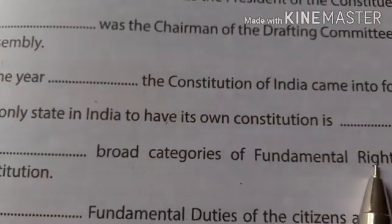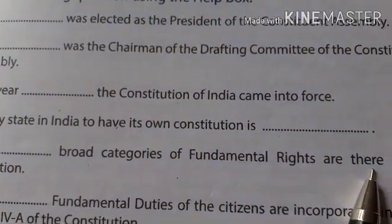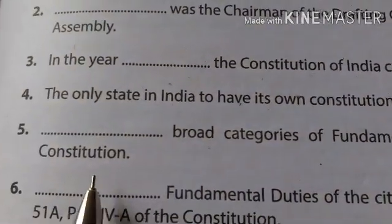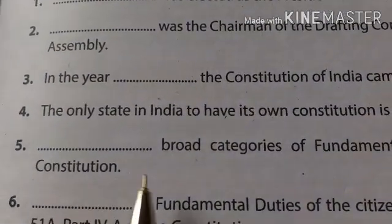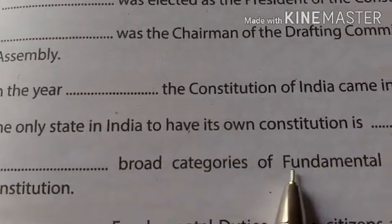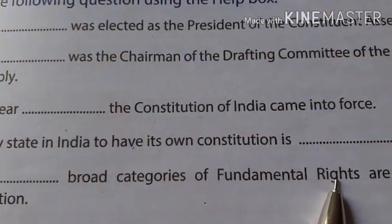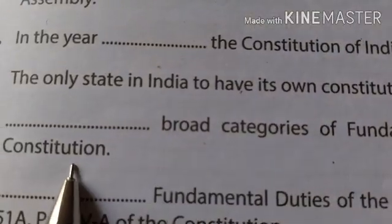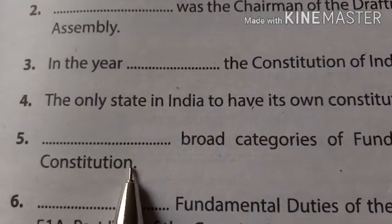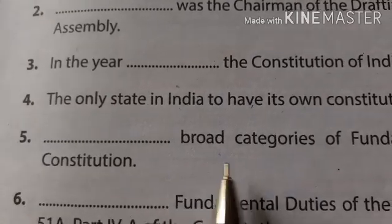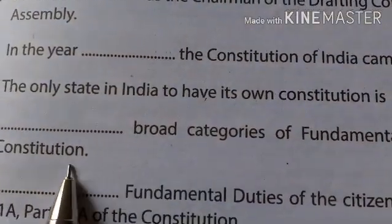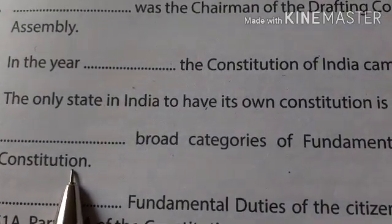How many broad categories of fundamental rights are there in our constitution? Six broad categories of fundamental rights are there in our constitution.